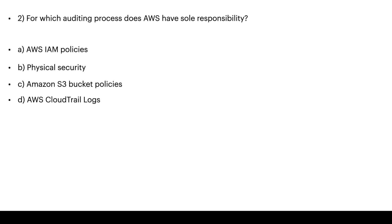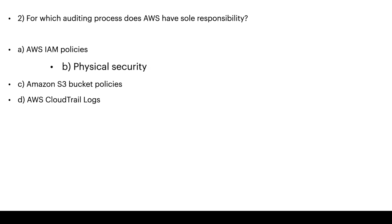The second question asks: for which additional process does AWS have sole responsibility? Options are: AWS IAM policies, physical security, Amazon S3 bucket policy, or AWS CloudTrail logs. The right answer is B: physical security.